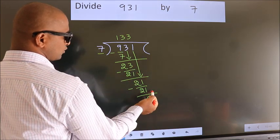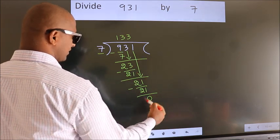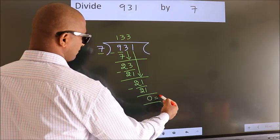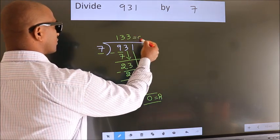No more numbers to bring it down. So, we stop here. This is our remainder. This is our quotient.